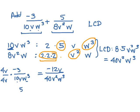So let's take a look at our second expression. We have 5 over 8v squared times w, and again, I want that to be expressed with a denominator of 40v squared w cubed. What do I need to multiply this by? Well, 8 into 40 goes 5 times, so I multiply that by 5.